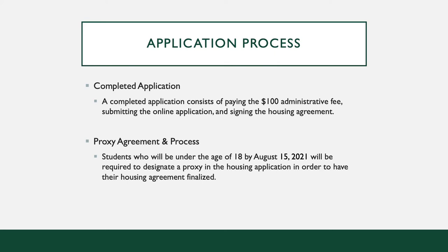Some students may need a proxy agreement in order to complete their application. Students who will be under the age of 18 by August 15, 2021 will be required to designate a proxy in the housing application in order to have their housing agreement finalized. The student will need to enter the name, email address, and relationship of the proxy. The proxy designation will expire 48 hours after it is submitted. It is important to make sure you enter an active email address for your proxy, as they will be emailed a link to access the agreement to sign.